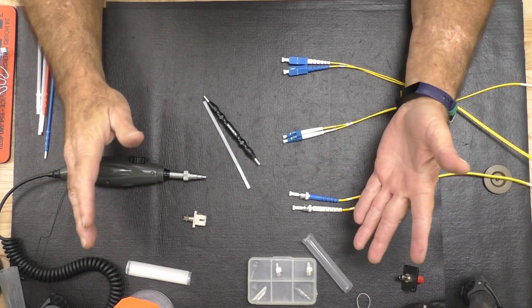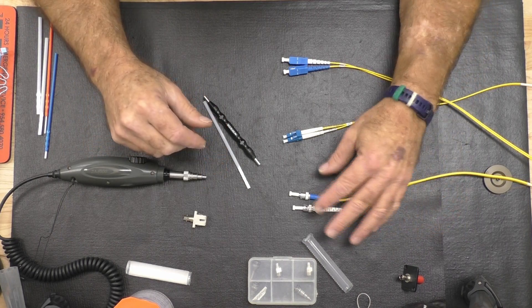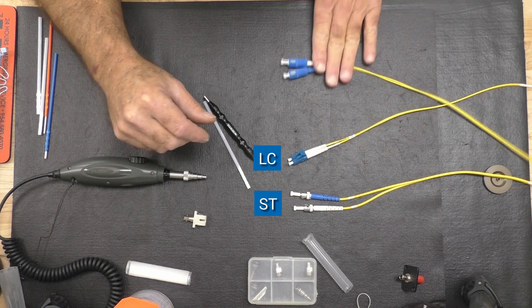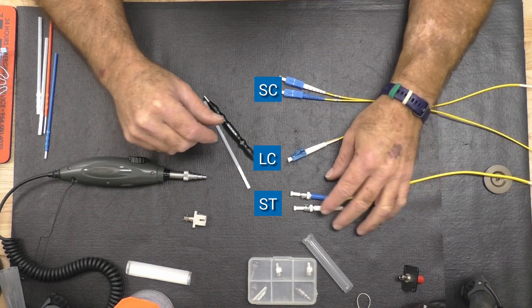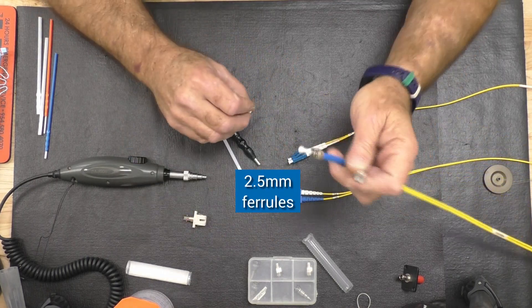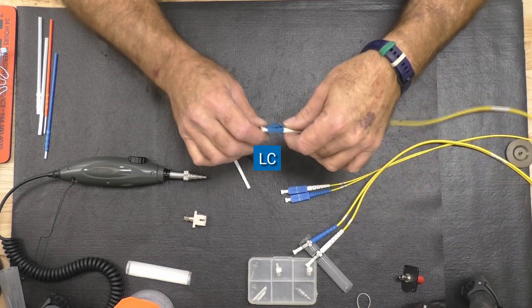Next I'd like to discuss the cleaning of conventional fiber connectors such as the ST, LC, and SC. The ST and SC both have 2.5 millimeter ferrules, while the LC connector has 1.25 millimeter ferrules.